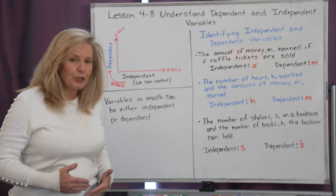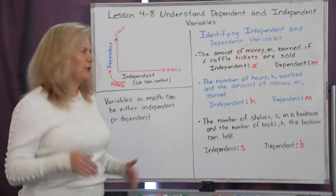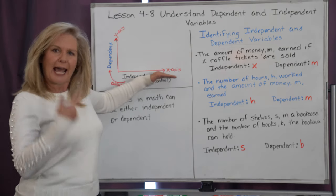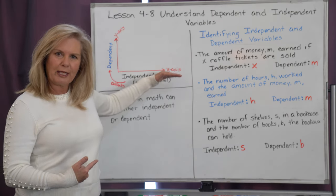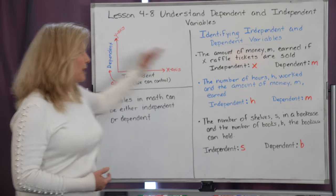The number of hours directly affects how much money is earned. Therefore, our hours h has to be our independent variable and that's affecting directly our dependent variable of m.